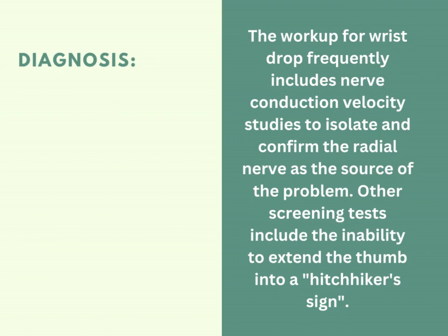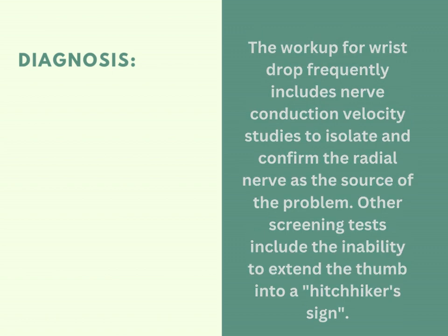After causes and symptoms, we will check how to diagnose wrist drop. Similar to carpal tunnel syndrome, which is also a nerve injury, a nerve conduction velocity test is carried out. The workup for wrist drop frequently includes nerve conduction velocity studies to isolate and confirm the radial nerve as the source of the problem. There is also a screening test that includes the inability to extend the thumb, known as the hitchhiker's sign.